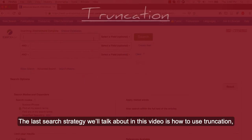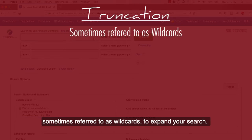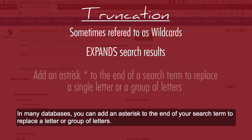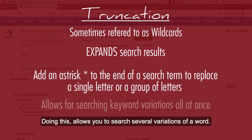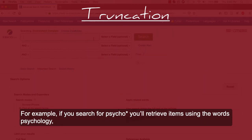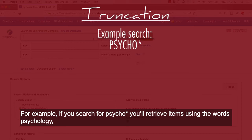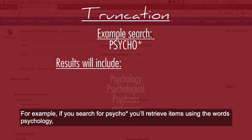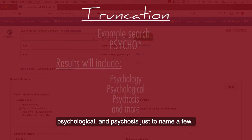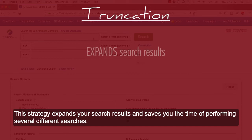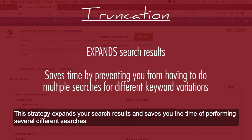The last search strategy we talk about in this video is how to use truncation, sometimes referred to as wildcards, to expand your search. In many databases, you can add an asterisk to the end of your search term to replace a letter or group of letters. Doing this allows you to search several variations of a word. For example, if you search for psycho*, you'll receive items using the words psychology, psychological, and psychosis, just to name a few. This strategy expands your search results and saves you the time of performing several different searches.